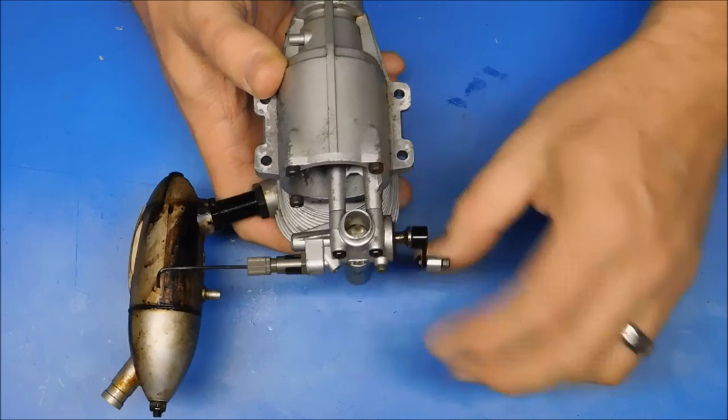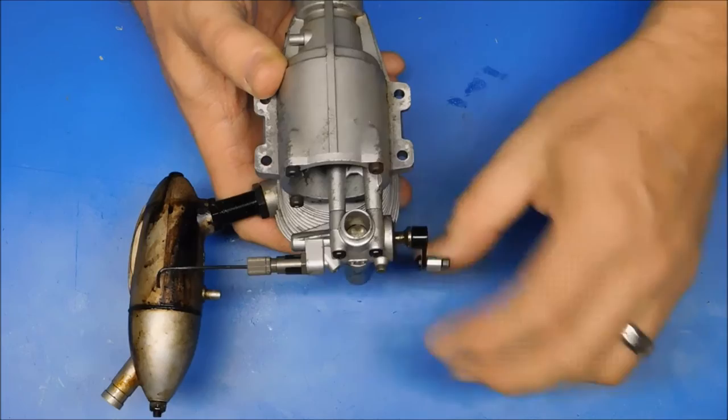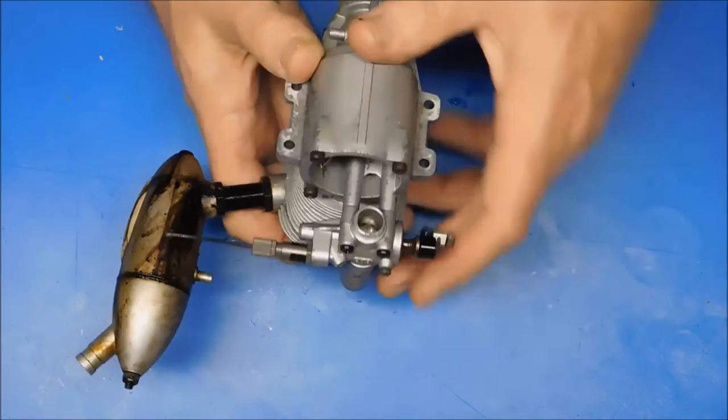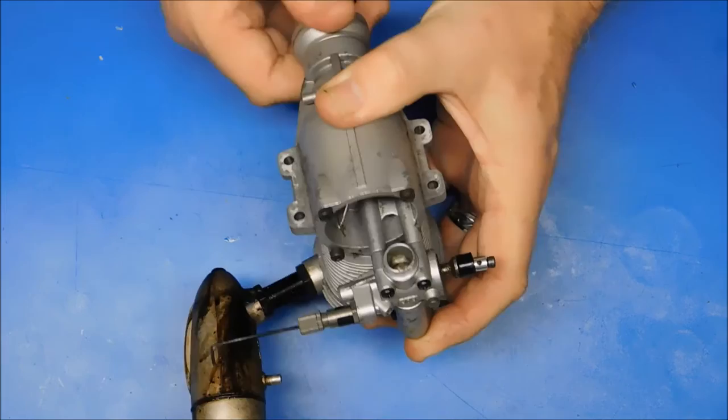But this carb barrel is completely frozen. I mean this thing unscrews and that's it. That screw loosened up there. So the carb is frozen up. The needle valve still rotates. So we've got good compression here.